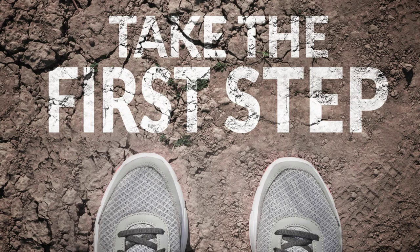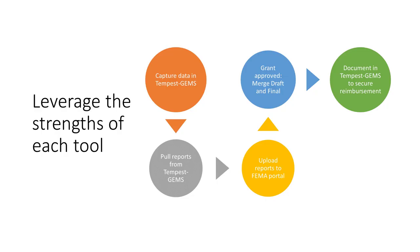To help you assess these early steps, we're going to examine the first steps you'll take in Tempest Gems, such as the employee roster with fringe rates, equipment lists, and material lists. If it were me, I would use each tool to its strength. I'd capture data in Tempest Gems early — I'd need it there for my closeout. Tempest Gems generates the forms and data needed for the portal. I'll pull reports from Tempest Gems to upload to the portal, and when the grant is awarded, I'll make sure my draft and the final version from FEMA get merged.